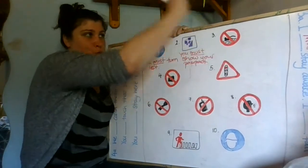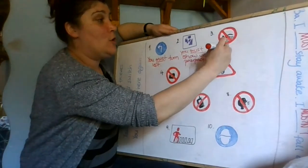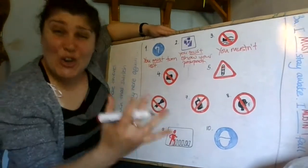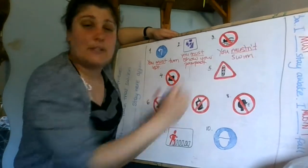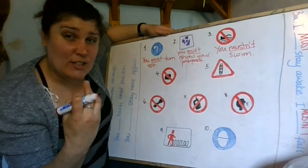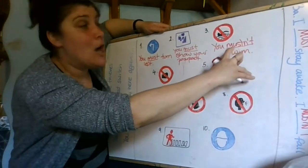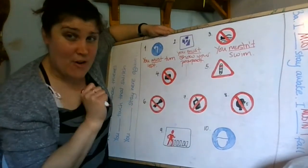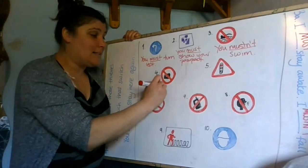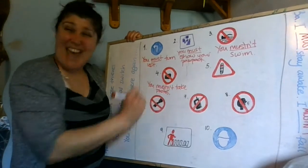Number three, then — with a cross. Is that must or mustn't? Good, mustn't. So, you mustn't — and what mustn't you do? You mustn't swim. Excellent. Be careful with the spelling of mustn't — the pronunciation is 'mustn't', but with the spelling, don't forget the T: must-n't. Very important. Number four: you mustn't take photos. Excellent, well done.